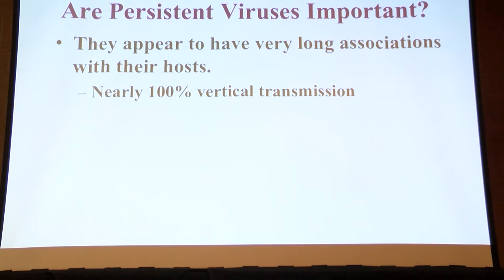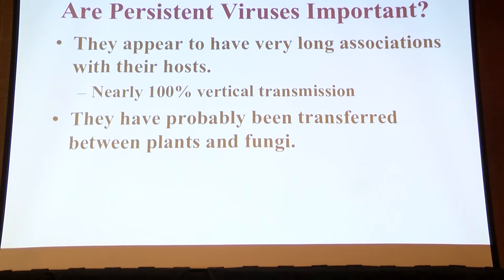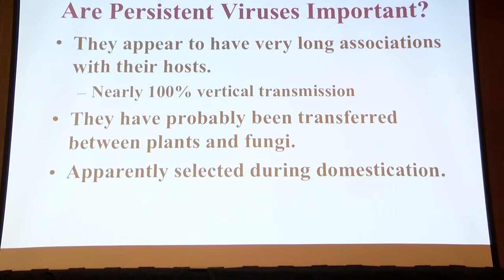Are they important? They have really long associations with their host, with near 100% vertical transmission — that's why you can't get rid of them. They've probably been transferred between plants and fungi, and phylogenetics indicates that strongly — they have common ancestors in plants and fungi. They were apparently selected during domestication because they're really enriched in domestic crop plants. Parasites with 100% vertical transmission are generally assumed to be mutualistic.